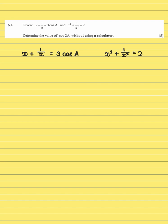They are saying given that x plus 1 over x is equal to 3 cos A and x squared plus 1 over x squared is equal to 2, determine the value of cos 2A without using a calculator. Now we can see that this is a 5 mark question.